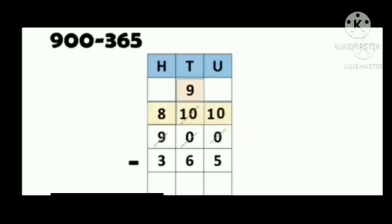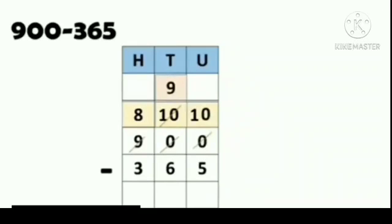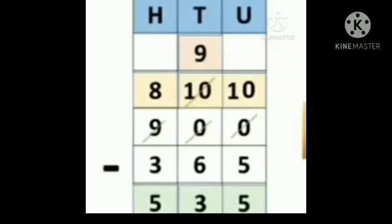If we borrow from the hundreds, 900 will become 800, and 100 will come to the tens place, becoming 10 tens. Then we borrow from the tens to the units place: 10 tens becomes 9 tens, and 1 ten comes to the units place as 10 units. So we have 10 units, 9 tens, and 8 hundreds. 10 units minus 5 is equal to 5. Tens place: 9 minus 6 is equal to 3. Hundreds place: 8 minus 3 is equal to 5. So the answer is 900 minus 365 is equal to 535.